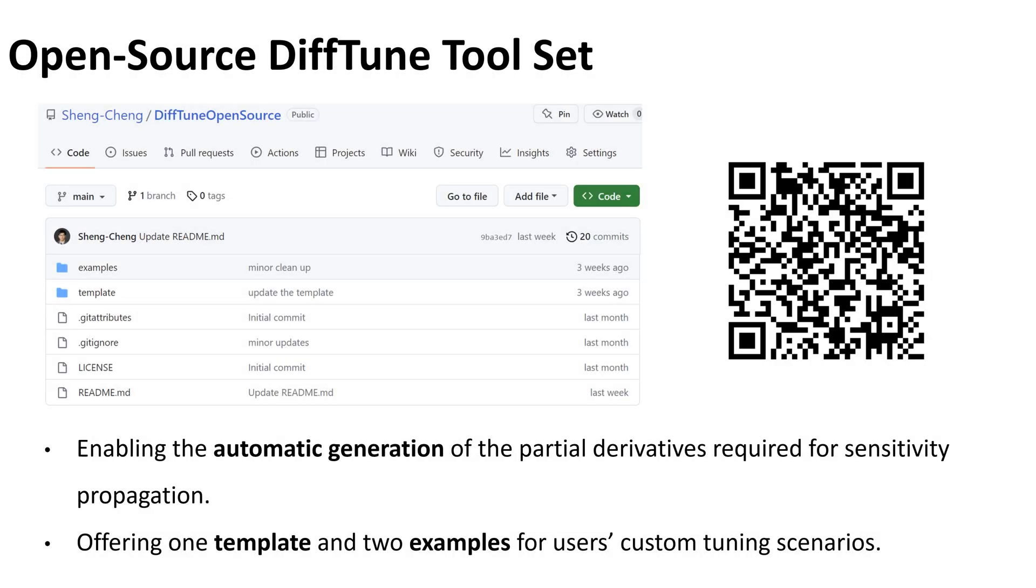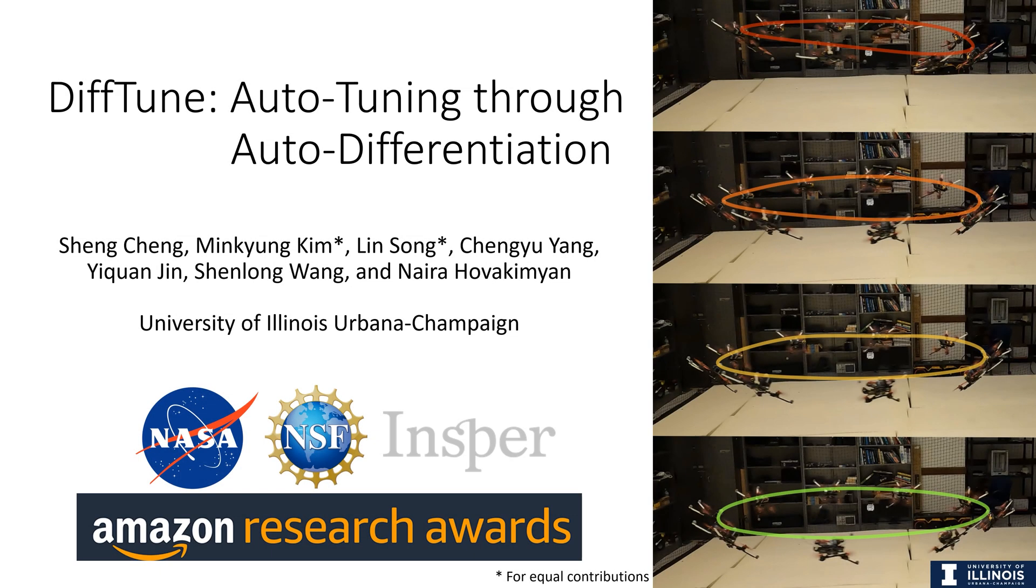We open-sourced our DiffTune tool set. We have included the sensitivity propagation and auto-generation of the Jacobians. Along with two examples, we provide one template to make it easy to fill in and auto-tune custom controllers. Thank you for watching.